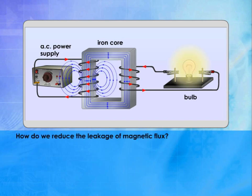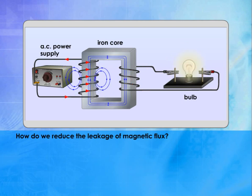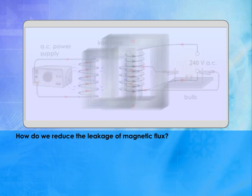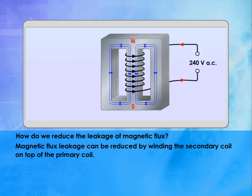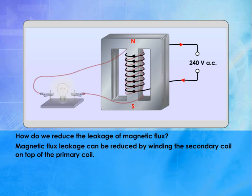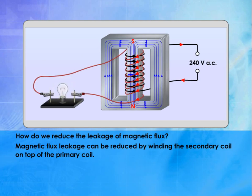How do we reduce the leakage of magnetic flux? Magnetic flux leakage can be reduced by winding the secondary coil on top of the primary coil.